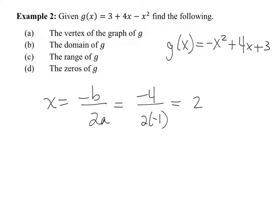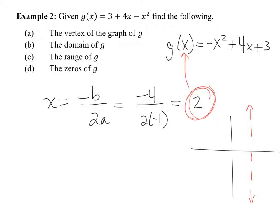If x equals 2 for the axis of symmetry, what can you do with that information for part A? We're trying to find the vertex. We have the H value — this is the H value of the vertex. The vertex is somewhere on that line because of the symmetry of the graph. To find the vertex, just plug that 2 in. That's the H value — take it and plug it in to find G(2). Let's figure out what G of 2 is.